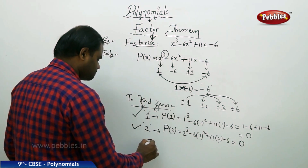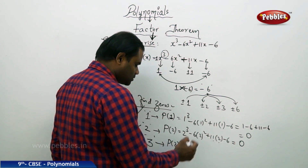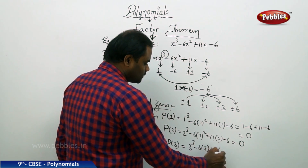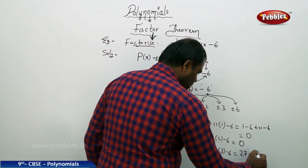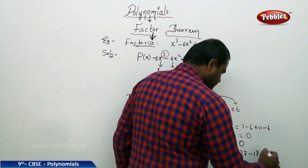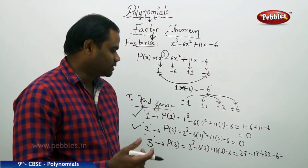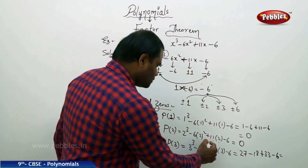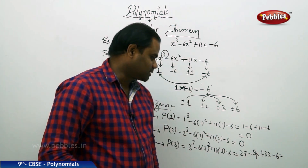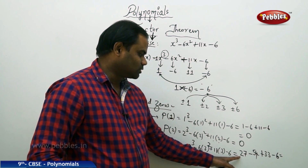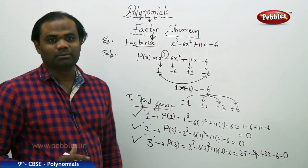Similarly, let's check P of 3. Substituting P of 3: 3 cubed minus 6 times 3 squared plus 11 times 3 minus 6. That gives 27 minus 54 plus 33 minus 6, which simplifies to 27 plus 33 minus 54 minus 6, giving 60 minus 60, which is 0. Therefore 3 is also a zero of the polynomial P of x.